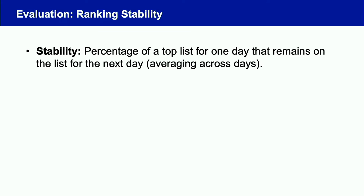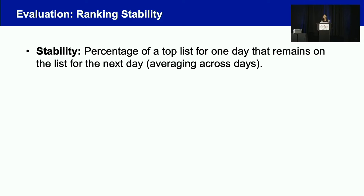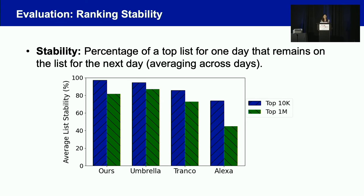Another important property is stability. We quantify stability as the percentage of a top list for one day that remains on the list the next day — in other words, the list intersection between two consecutive days. Stability is very important because the majority of a top list should not turn over in a very short period of time; otherwise, using those top lists will lead to completely different measurement results. For the top 10,000 — the range many researchers work with — we outperform Umbrella, Tranco, and Alexa. For top 1 million, our list outperforms Tranco and Alexa and is comparable with Umbrella.